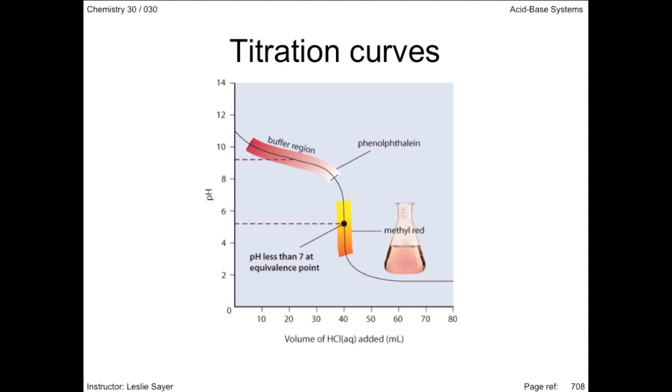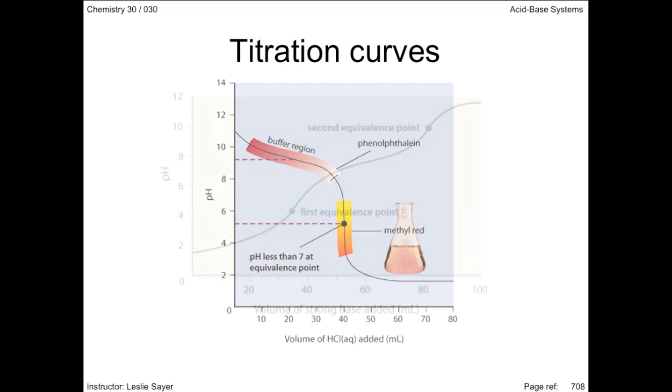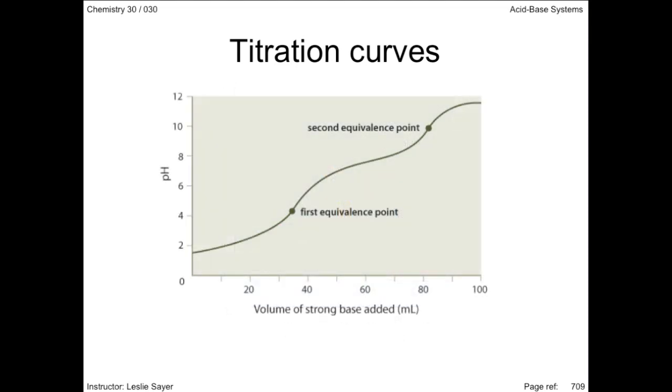What if the acid was diprotic, like sulfurous acid? The hydrogen atoms are not bound with the rest of the molecule with equal strength. That is, one hydrogen will be donated more easily than the second. This results in two quantitative reactions, indicated on a titration curve as having two endpoints.